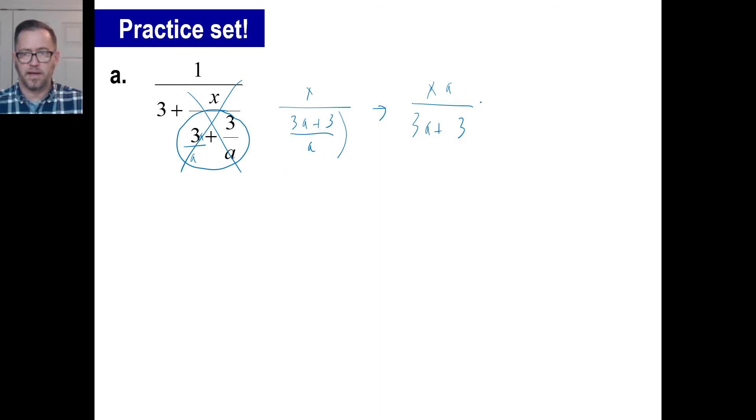Okay. Now we have, we're going to add, I'll just kind of squeeze this in here, 3 plus this fraction here. Of course, we know our denominator is going to be, you know what, let me go ahead and just move this down there. So we have 3 plus, then we have xA over 3A plus 3. Of course, our denominator is going to be 3A plus 3. And I'll multiply that by 3A plus 3. And we're going to get 9A plus 9 plus xA over 3A plus 3. Okay.